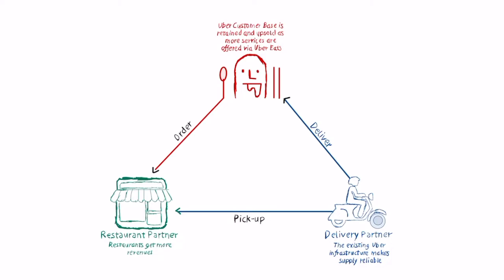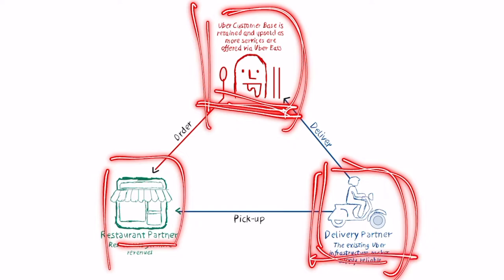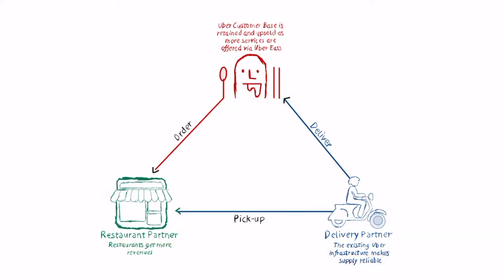In a three-sided marketplace, as you might imagine, we have three main core players. In this case, you have the users—people that want food delivered at home. You have the delivery partners—all those drivers who want to make some more money by delivering food. And then you have the restaurant partners.